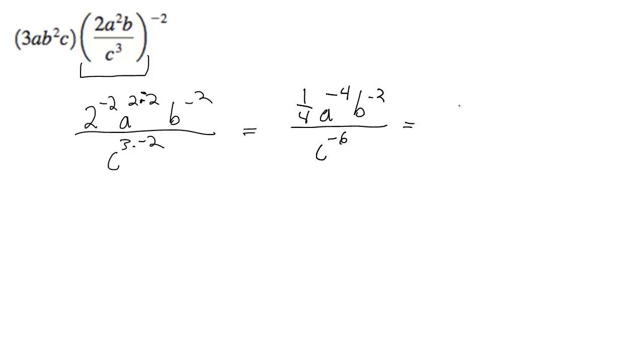c to the 6th over 4 a to the 4th b to the 2nd. Alright, so we multiply that times this.